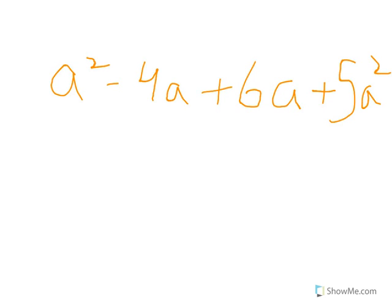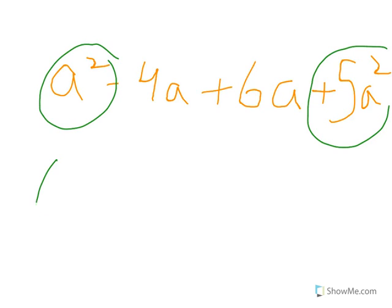Let me try one more: a² minus 4a plus 6a plus 5a². I can only add a² with a²: 1 plus 5 is 6a².